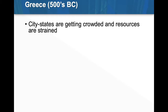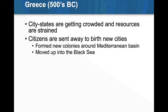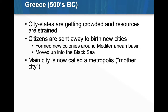Let's talk more about the history of Greece. This is in the 500s BC. The city-states are getting pretty crowded by now, and the resources of the city-states are becoming strained because of population growth. So what happens is citizens are being sent away to birth new cities. The city-states and the polis at the center are sending people away to create new colonies around the Mediterranean Sea Basin. They begin to move up into the Black Sea and make colonies up in that area. The main city is now called a metropolis.